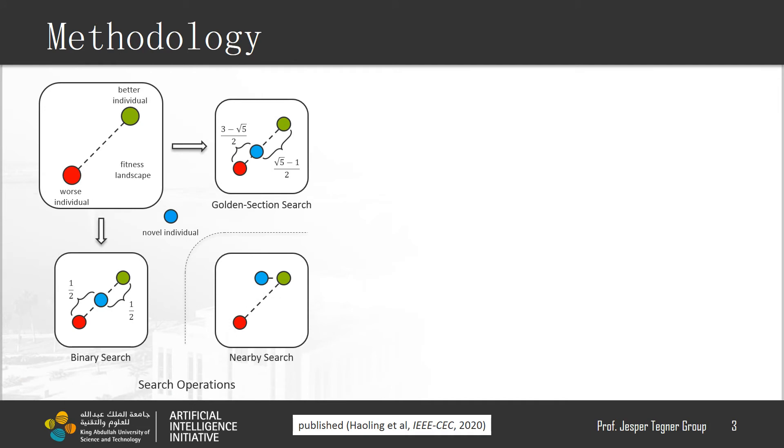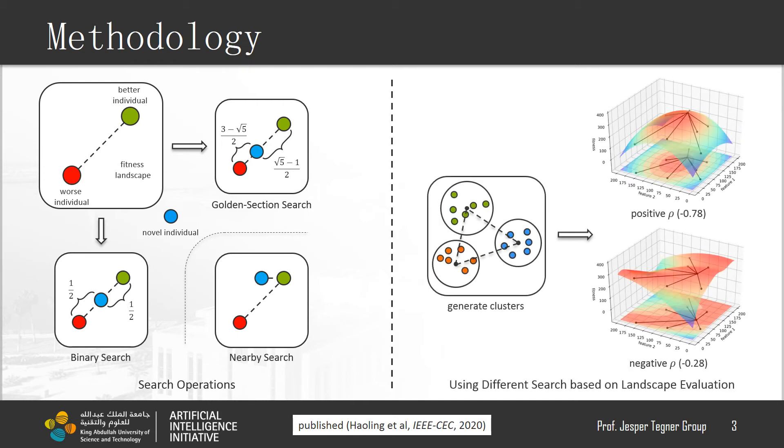When to do geometry search or local random search should be further discussed. We use cluster method to divide all the individuals into population size clusters. And then, we can evaluate the local landscape complexity of each cluster by correlation. So, please see our paper for getting detailed information.